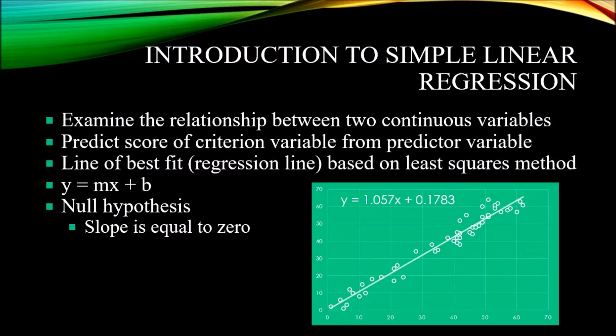A multiple linear regression involves multiple predictor variables. So here we're just talking about a simple linear regression, one predictor variable and one outcome variable.